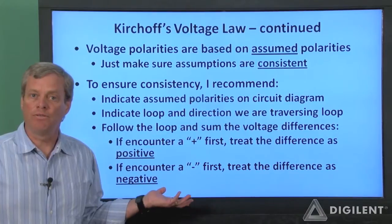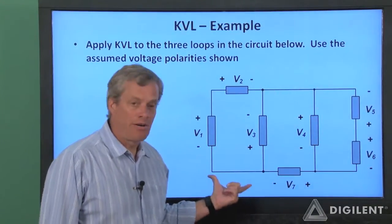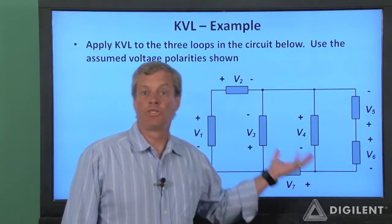Let's take a look at a couple of examples. Here's our example circuit. The assumed voltage polarities in the circuit are indicated. These polarities were chosen at random.